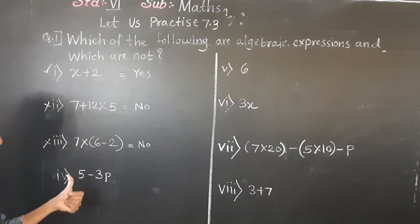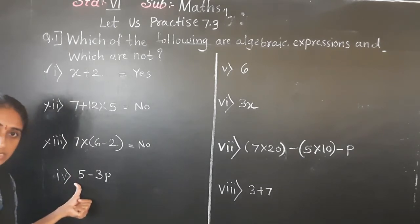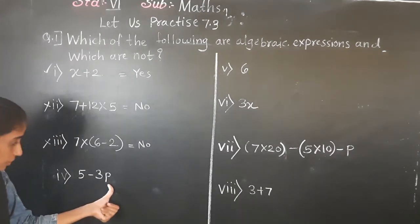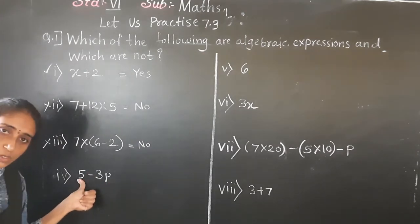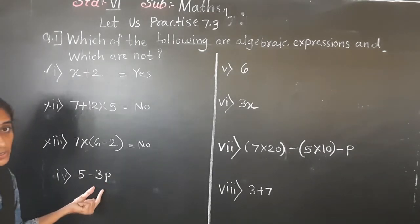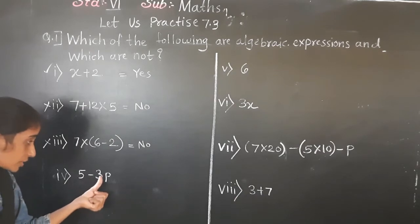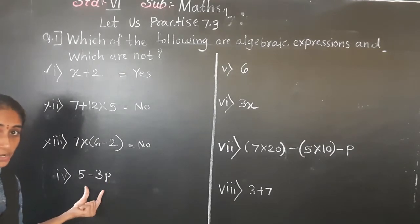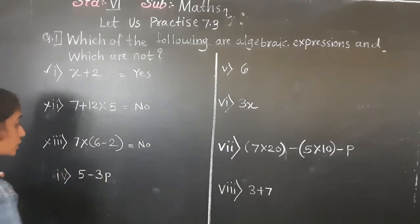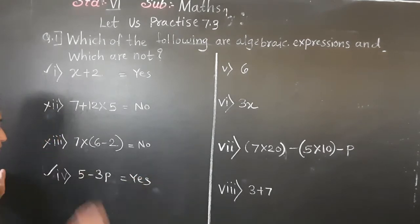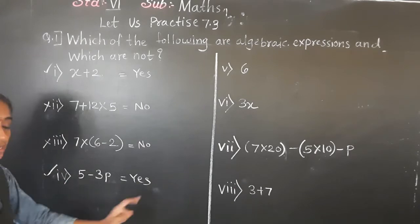In the fourth example, 5 minus 3p: constant is given, variable p is given, and basic operations are given — subtraction is shown by the minus sign, and 3p means 3 multiplied by p (multiplication). So this is an algebraic expression — yes.